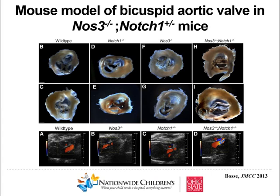Wild-type mice show normal three-leaflet aortic valves. NOTCH1 heterozygous mice are essentially normal. NOTCH3 mice, interestingly, also have a bicuspid aortic valve in about 25% of them. But in the compound mutants that survived — about a third survive — almost 100% developed a bicuspid aortic valve phenotype, and they also developed stenosis. Normally you see nice flow from the left ventricle to the aorta, but here we see increased velocity. We now have a mouse model of congenital heart disease that develops progressive disease with time.